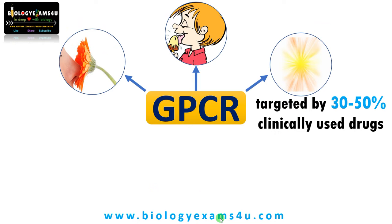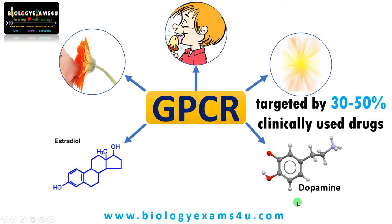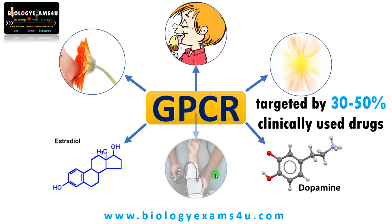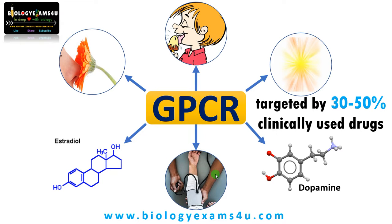GPCR is targeted by 30 to 50 percent of clinically used drugs, as this receptor can respond to a wide variety of extracellular signals such as smell, taste, light, hormones like estradiol, neurotransmitters such as dopamine, and many other chemical signals. This receptor also controls important functions such as heartbeat and blood pressure. As it is a promising therapeutic target, this is the most extensively studied receptor.